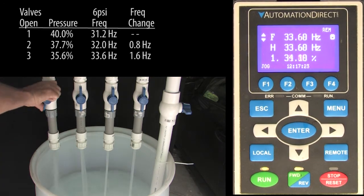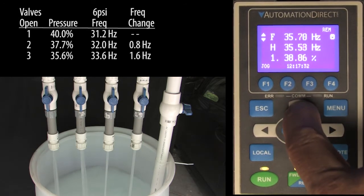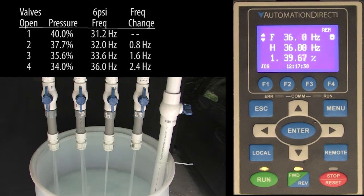Open the fourth valve, system pressure drops. Add more drive speed to get the pressure back and add that to the chart.